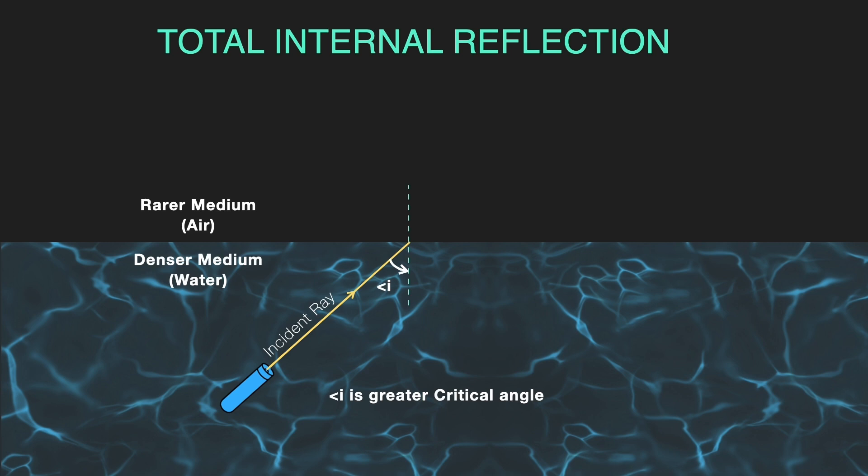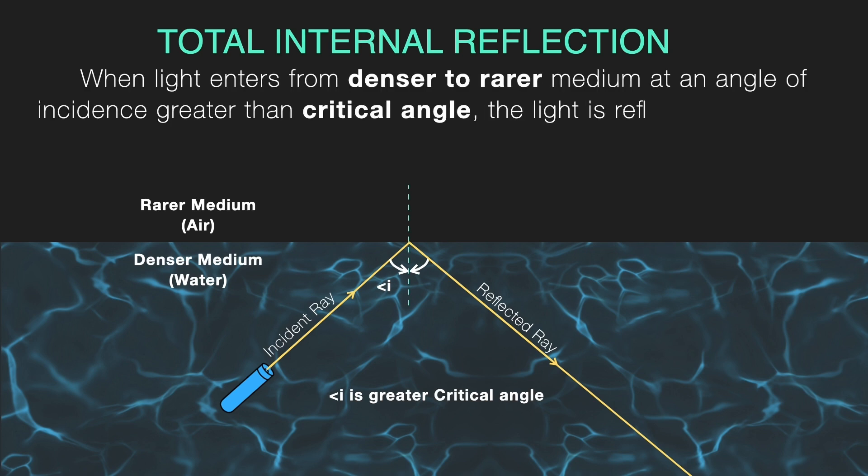Instead of passing into the air from the water, the light just reflects back. It bounces back into the same medium, following the usual laws of reflection. That's what we call total internal reflection.